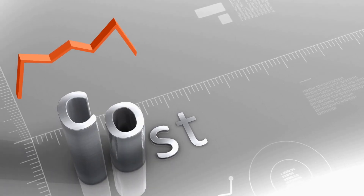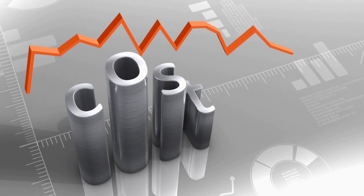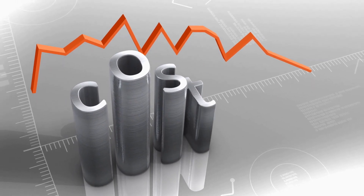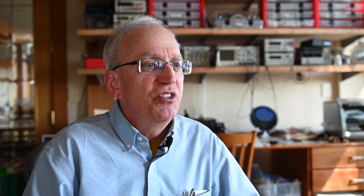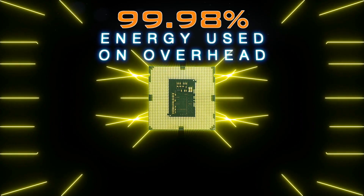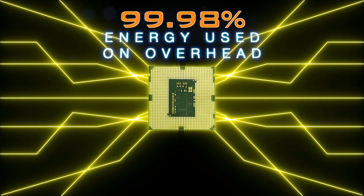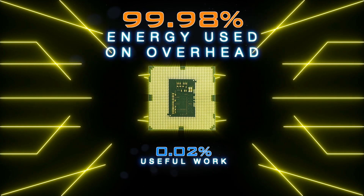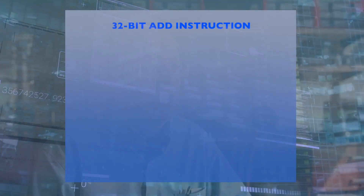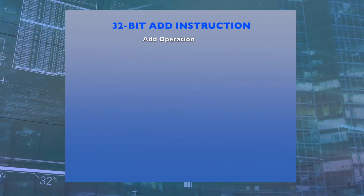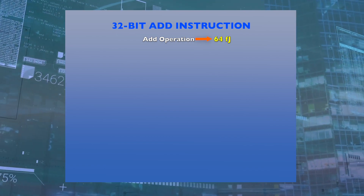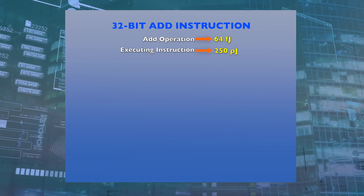Another key advantage of accelerators is their ability to significantly reduce overhead. Many people don't realize it, but a typical CPU spends 99.98% of its energy on overhead and only about 0.02% of its energy actually doing useful work. For example, a 32-bit add instruction — doing the add operation itself takes about 64 femtojoules, while executing the instruction takes 250 picojoules.